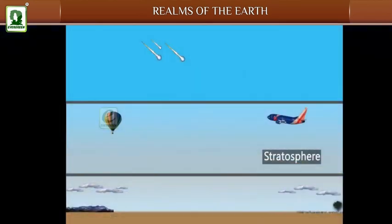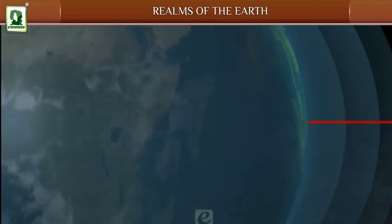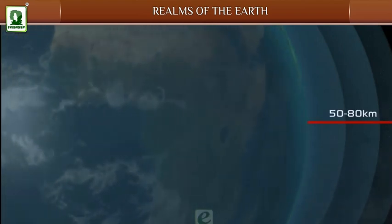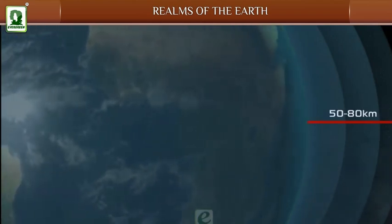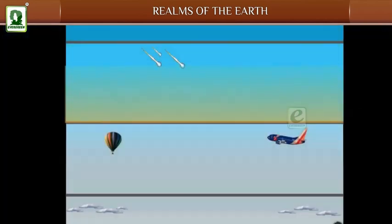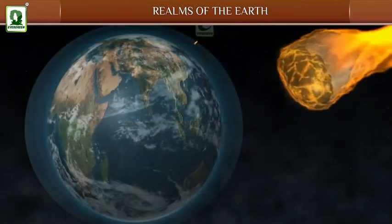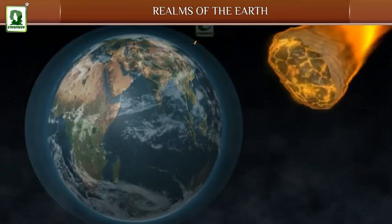Mesosphere: It lies above the stratosphere, extending up to a height of 50 to 80 kilometers above the surface of the earth. It is the coldest part of the earth's atmosphere at minus 90 degrees Celsius. Meteors burn up in the mesosphere.